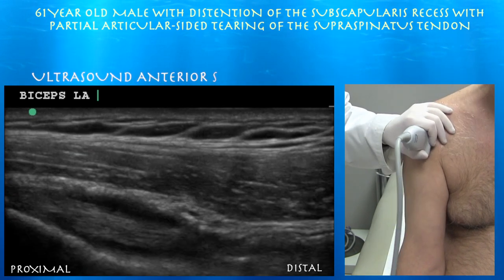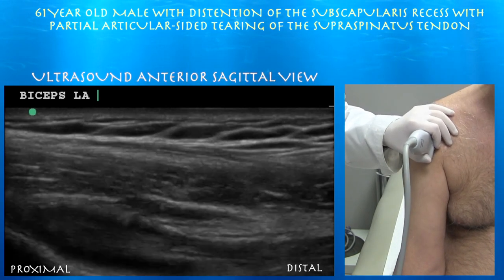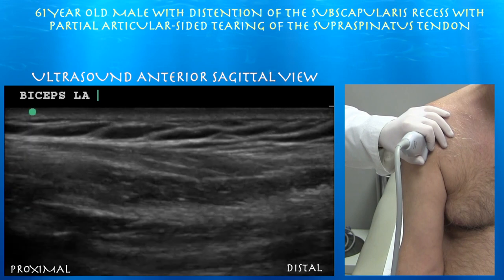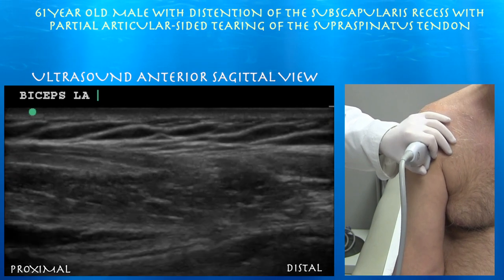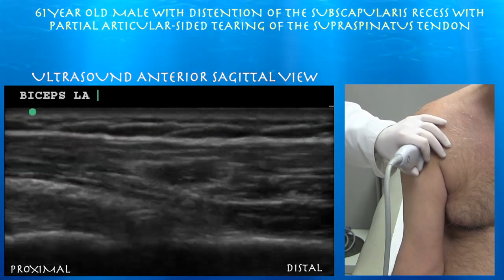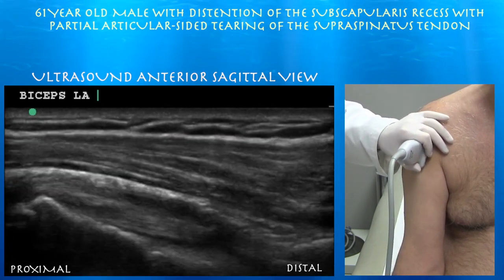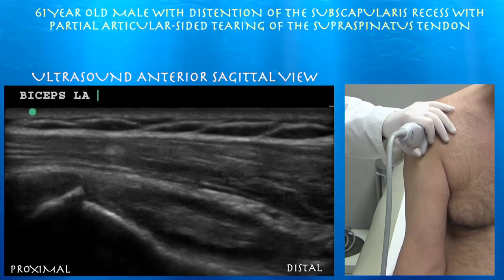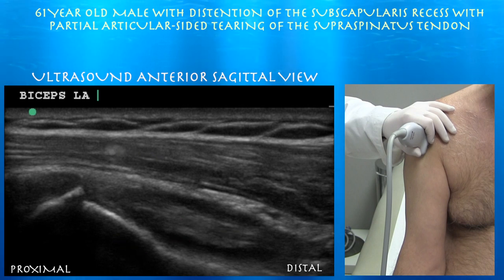Looking at this in long axis — here's the biceps tendon. You can see a fair amount of fluid around it. And again here you can see the fluid basically surrounding the biceps tendon.